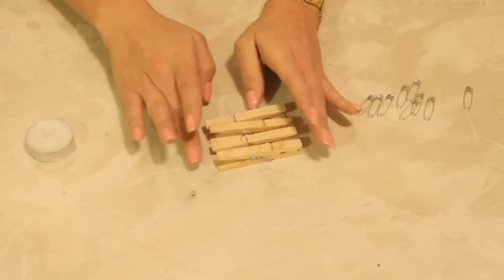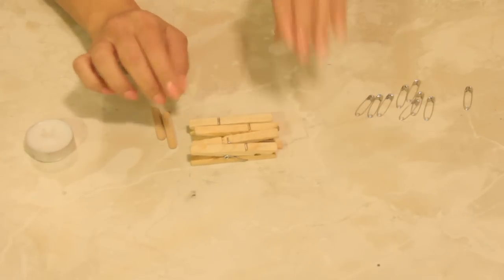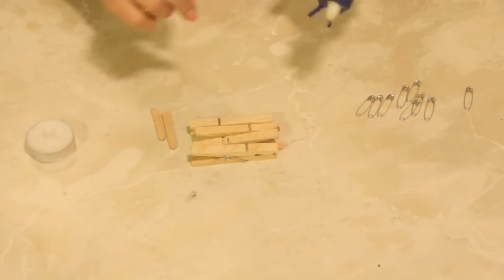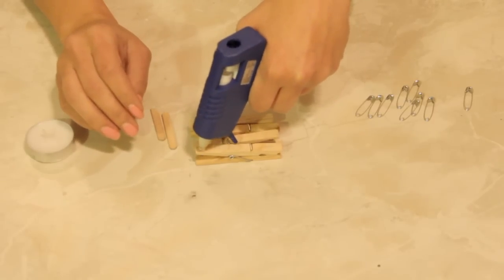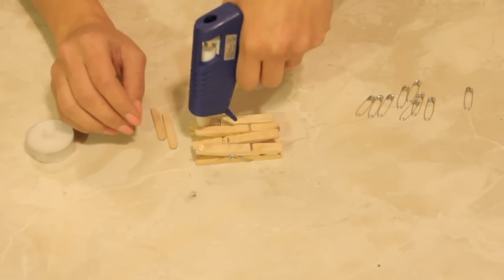So here I have a couple of clothespins. I'm going to take my hot glue gun. Now if you're a child, do not do this. Ask an adult to do this part for you. And I'm going to dab on a couple little beads of hot glue here.